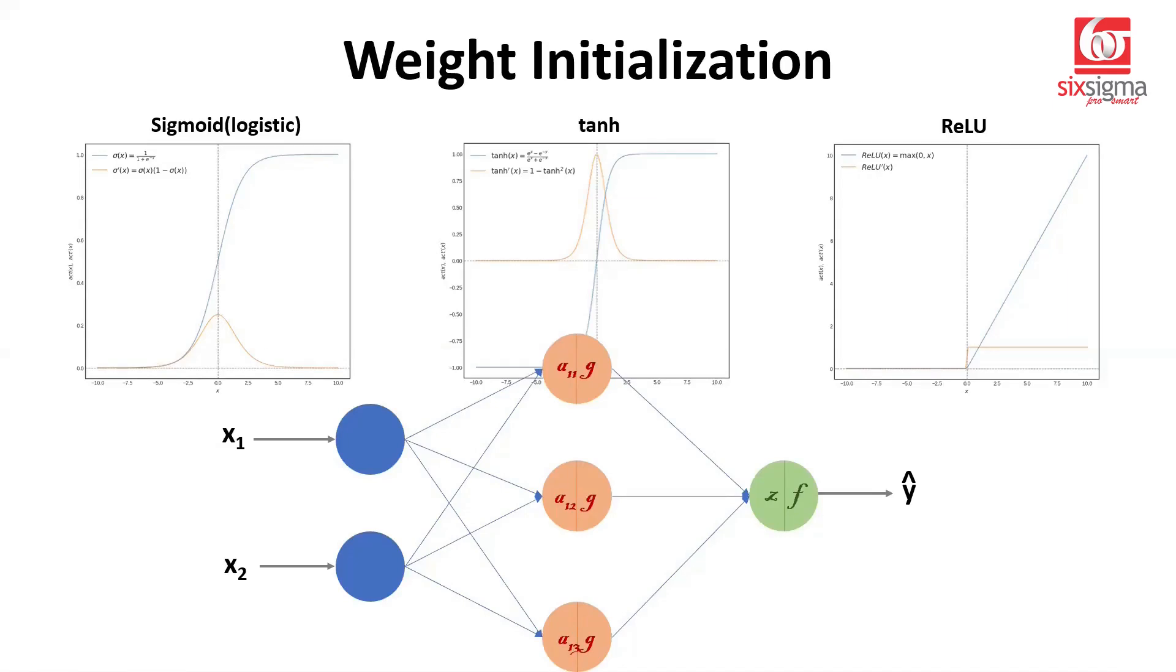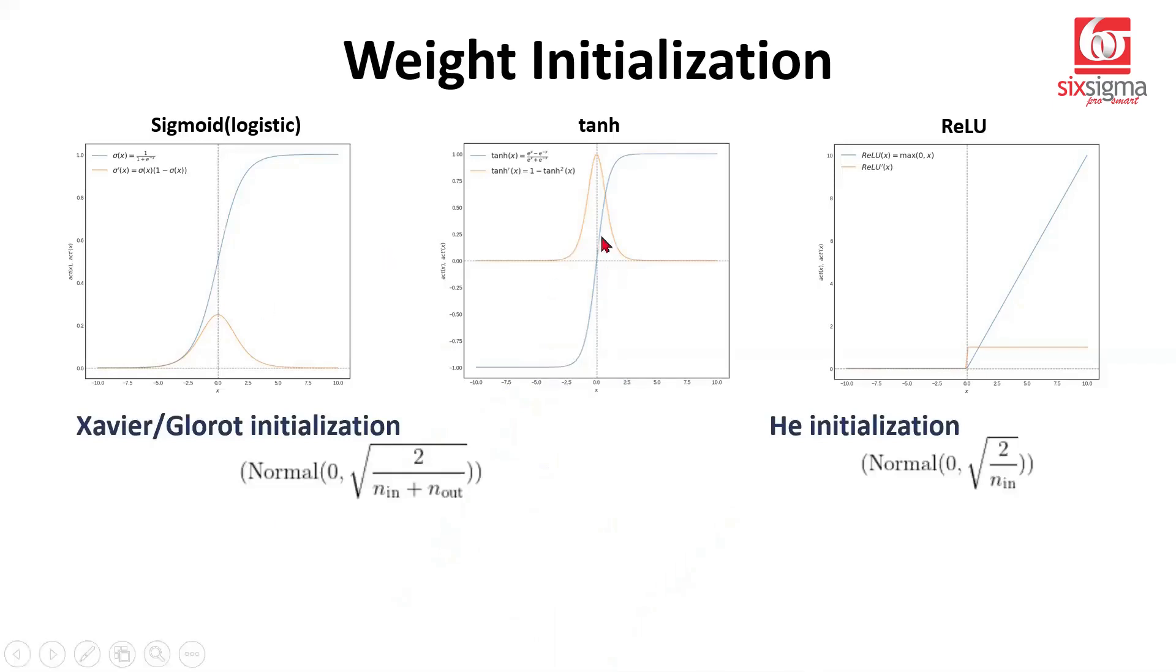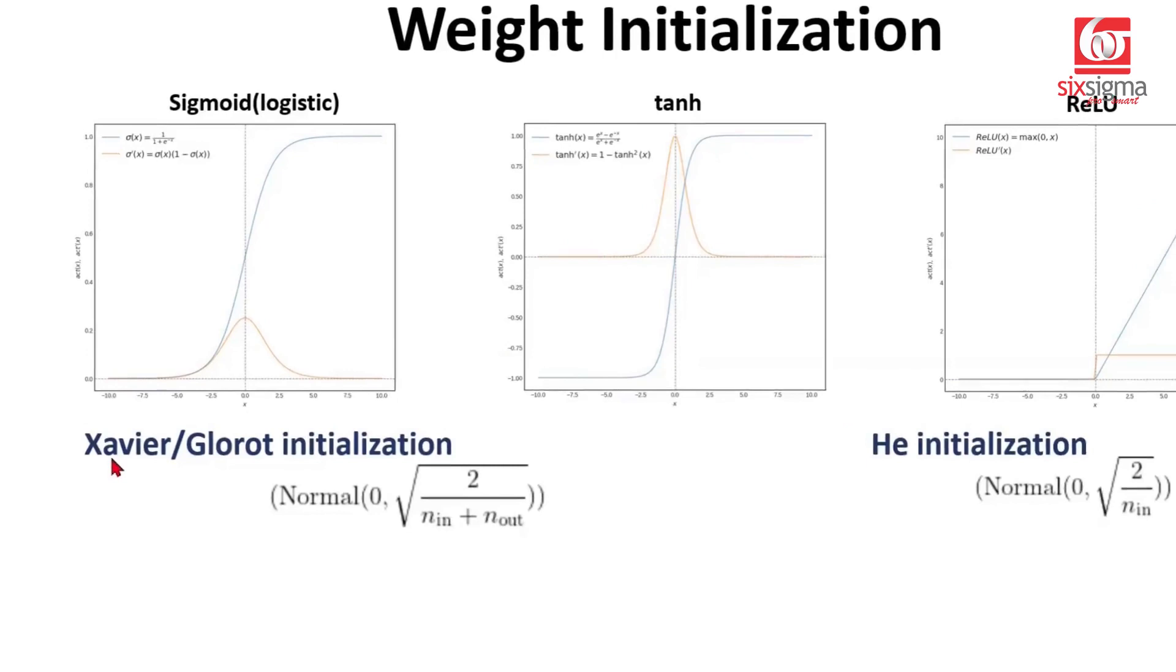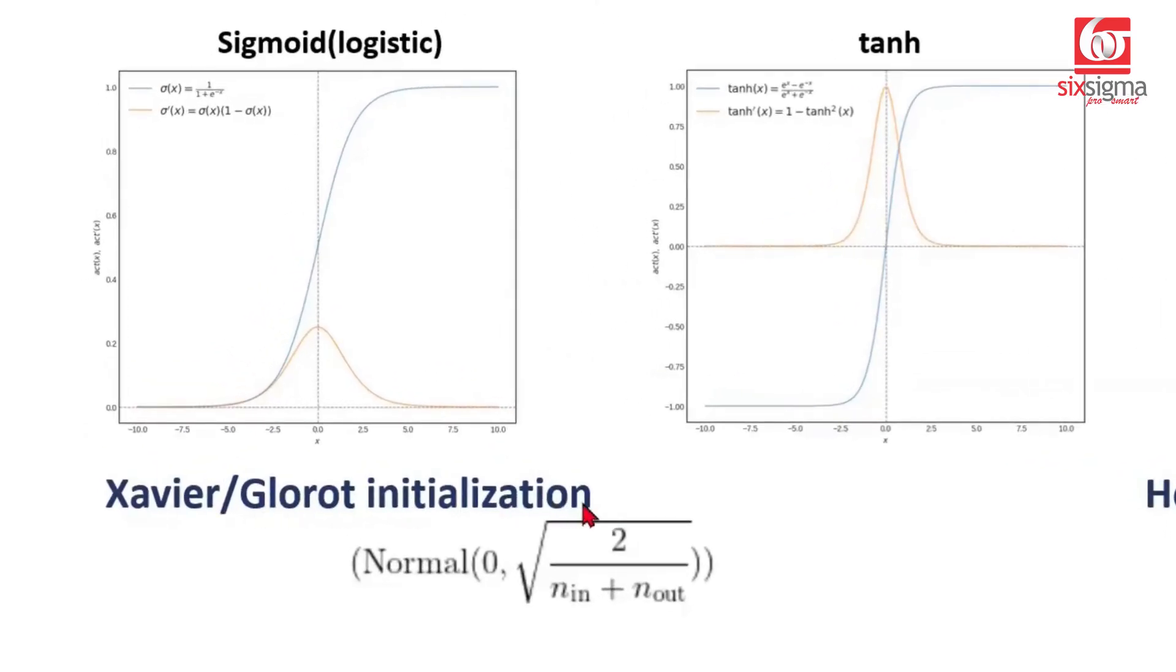We know that weights are the parameters. We cannot pass them ourselves, but we can choose a method to initialize them. So during their quest to find the right weight initialization methods, the researchers realized that it would always depend on the number of neurons. Because the number of neurons that we have chosen at different layers determine the number of connections. And based on this, two popular recommendations that are mostly followed are given like this. For a sigmoid or a tanh kind of an activation function, it is Xavier or Glorot initialization. It's essentially the name of the same person, the first name and the last name.